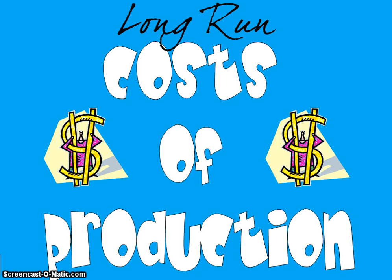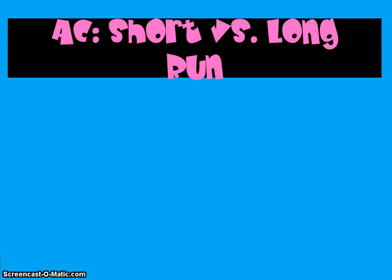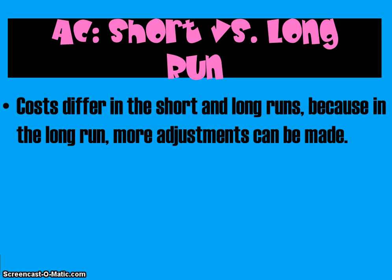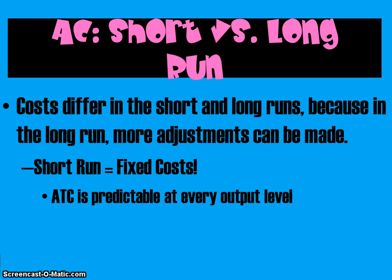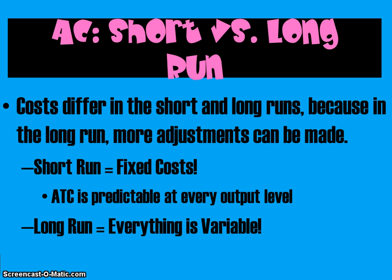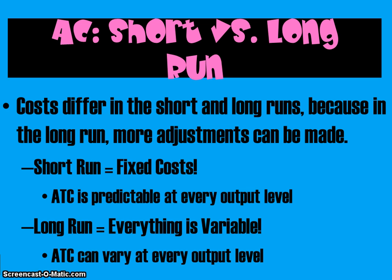This lecture looks at cost of production in the long run. In the short run, there's at least one cost that's fixed, but in the long run you can plan for changes to your production facilities and change everything. In the short run there are fixed costs and average total cost is predictable at every output level, but in the long run since everything is variable, average total cost can vary at every output level.